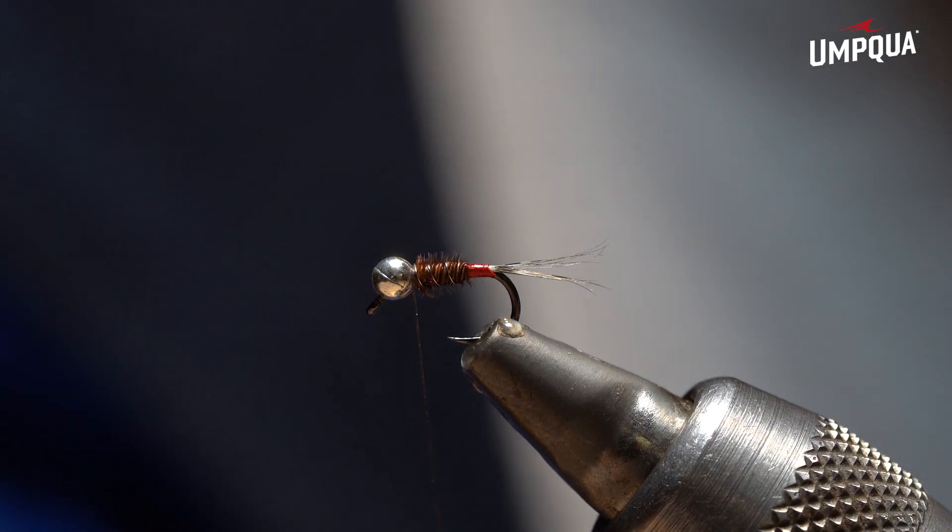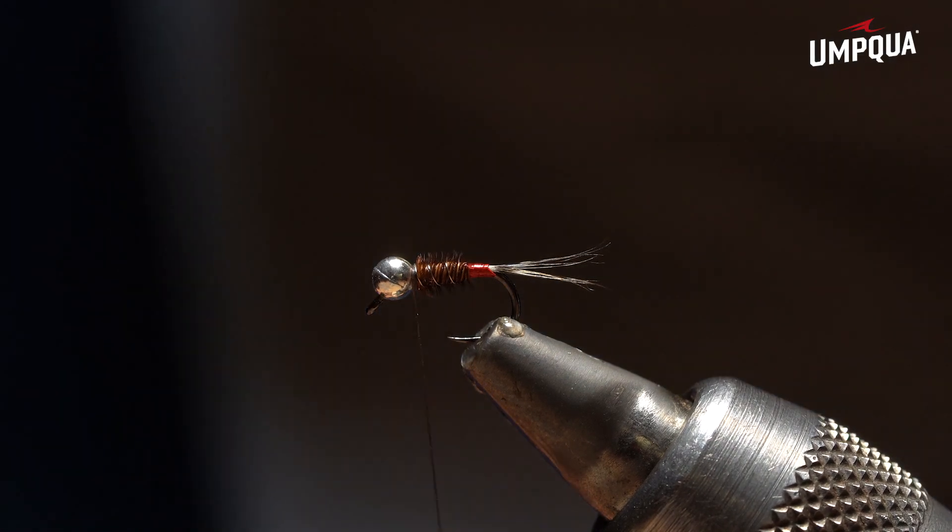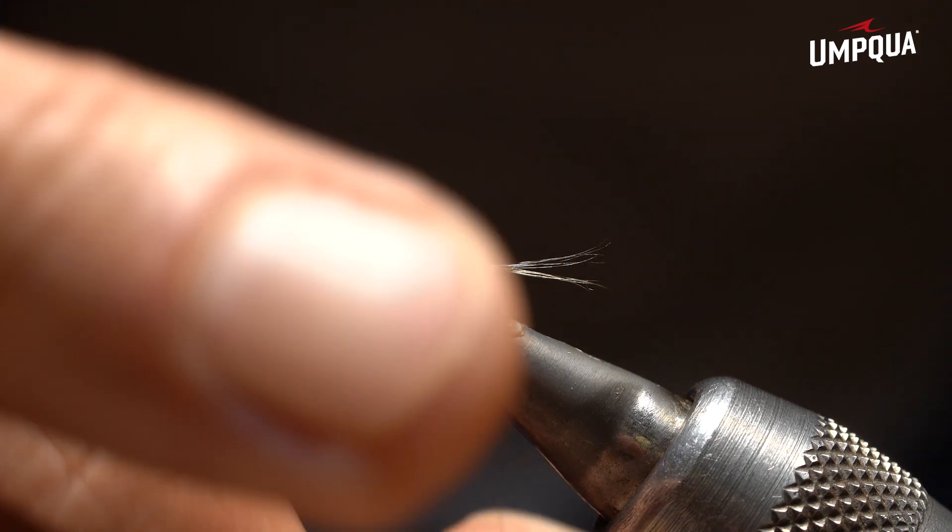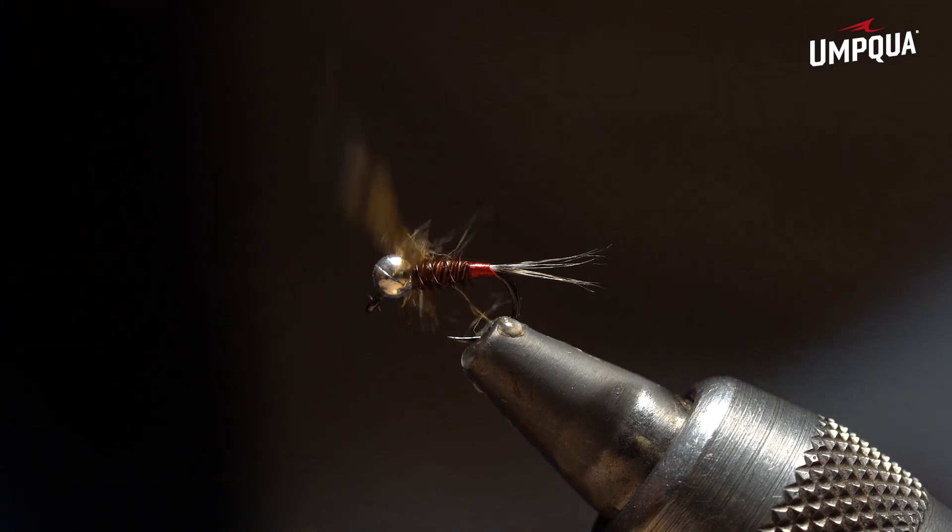And having the jig hook turning the hook upside down will help you not get stuck on the bottom, especially rivers that have a lot of vegetation on the bottom or a lot of debris. It will be a huge help.